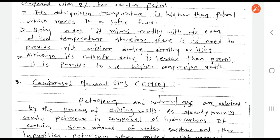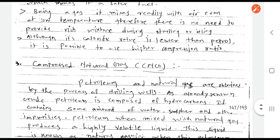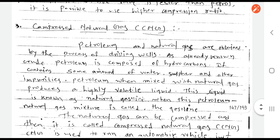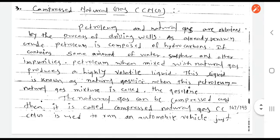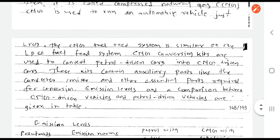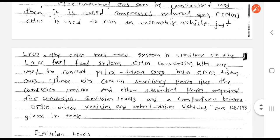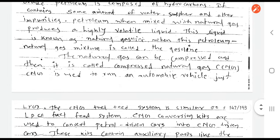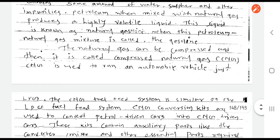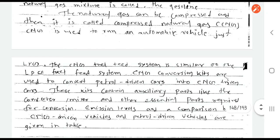The third alternative fuel is compressed natural gas (CNG). CNG is one kind of petroleum product and can be obtained by drilling wells, sometimes in the earth's crust or in the sea bed. It is also a very important alternative fuel. LPG also comes under this category of petroleum alternative fuels — liquefied petroleum gas.